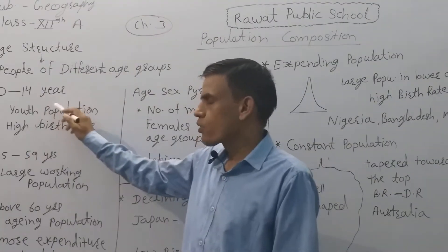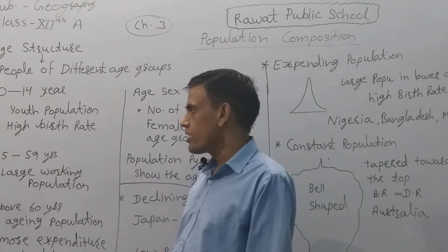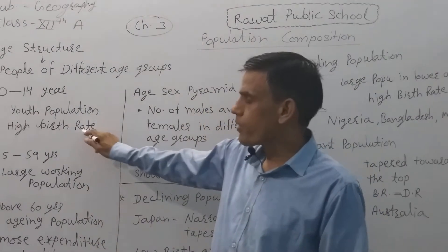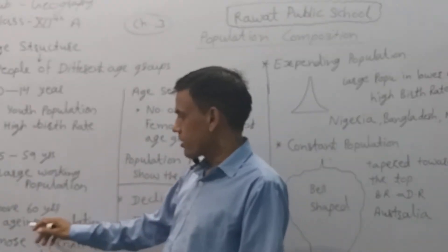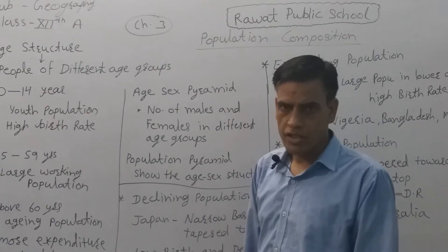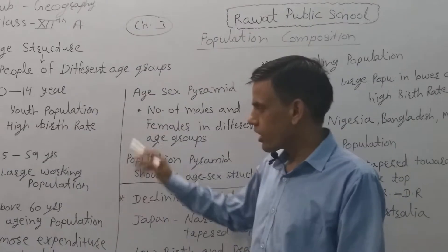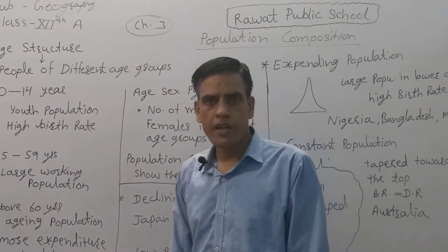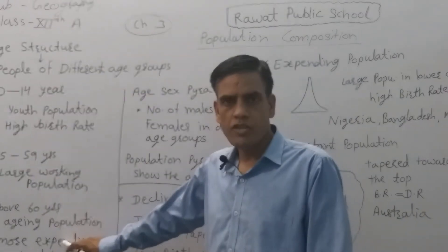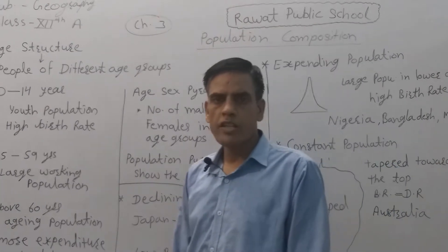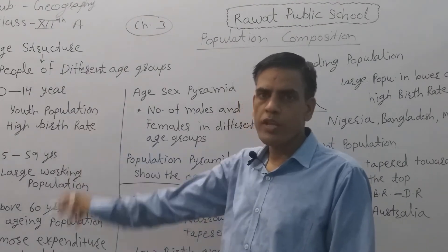If the population of 0 to 14 years is high, the birth rate is very high. If the 15 to 59 age group is very high, birth rate is high but life expectancy is also low. But if there is a large section of population above 60 years — as generally seen in developed countries — it means life expectancy is very high, health care facilities are improved, and both birth rate and death rate are low.